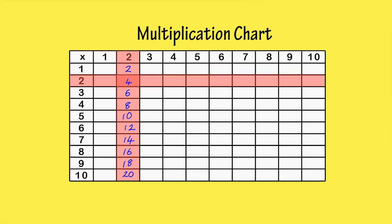We can also do the twos row. One times two is two. Two times two is already filled in. Three times two is six. Four times two is eight.